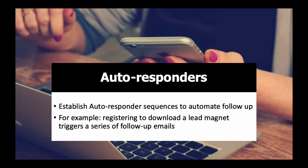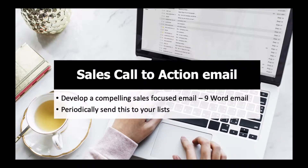You can establish autoresponder sequences to automate follow-up. Registering to download a lead magnet triggers a series of follow-up emails — they're all driven by autoresponders. You can find them in various mailing programs; MailChimp and a whole group of others have autoresponders. They can automate the important parts of follow-up in your business. For the sales call-to-action email, develop a compelling, sales-focused email — a nine-word email is a great approach.